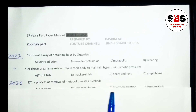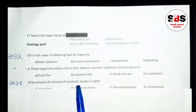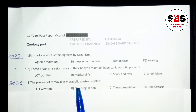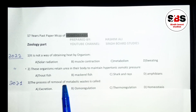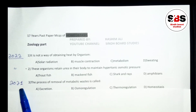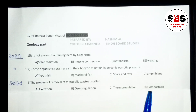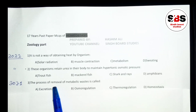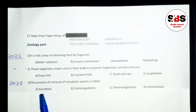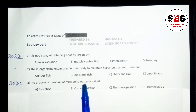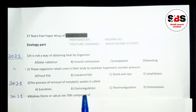Question number 3: the process of removal of metabolic waste from the body is called what? Option A is excretion, option B is osmoregulation, option C is thermoregulation, option D is homeostasis. The correct answer is excretion — it is the process by which an organism removes metabolic waste from the body.